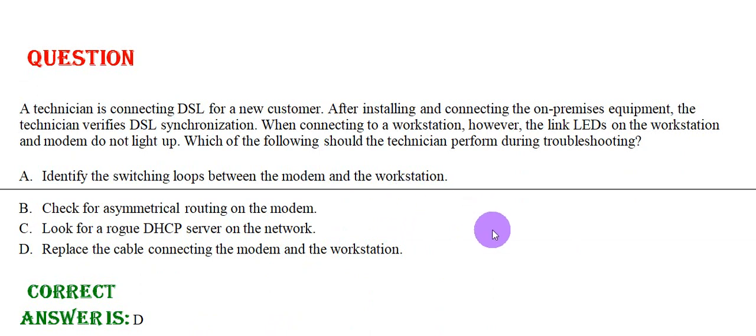A technician is connecting DSL for a new customer. After installing and connecting the on-premise equipment, the technician verifies DSL synchronization. When connecting to the workstation, however, the link LEDs on the workstation and modem do not light up. Which of the following should the technician perform during troubleshooting? Option A: Identify switching loops between the modem and workstation. Option B: Check for asymmetrical routing of the modem. Option C: Look at the rogue DHCP server on the network. Option D: Replace the cable connecting the modem and workstation. The correct answer is Option D.